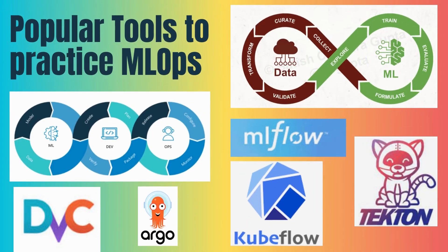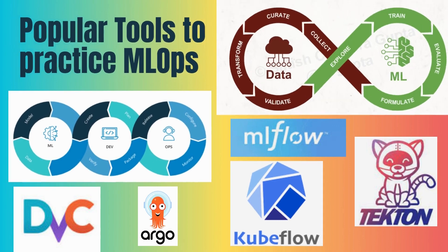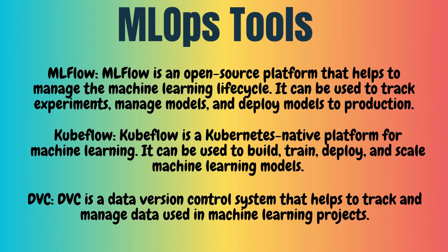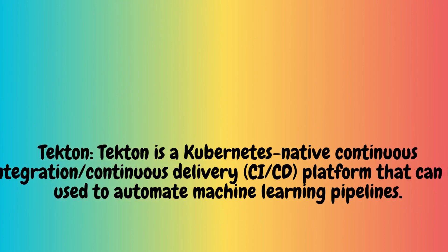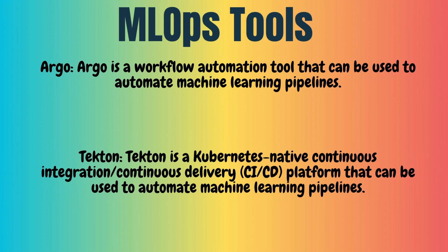In the third section, we cover popular MLOps tools. First, MLflow — an open source platform that helps manage the machine learning lifecycle; it can track experiments, manage models, and deploy models to production. Second, Kubeflow — a Kubernetes-native platform for machine learning that can be used to build, train, deploy, and scale machine learning models. Third, DVC — a data version control system that helps track and manage data used in machine learning projects. Fourth, Argo — a workflow automation tool used to automate machine learning pipelines.